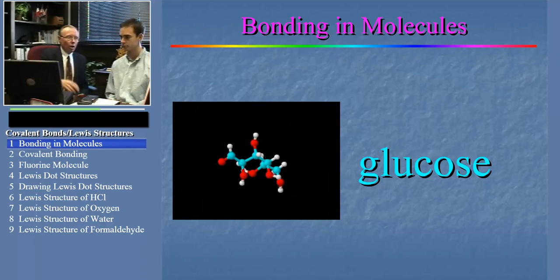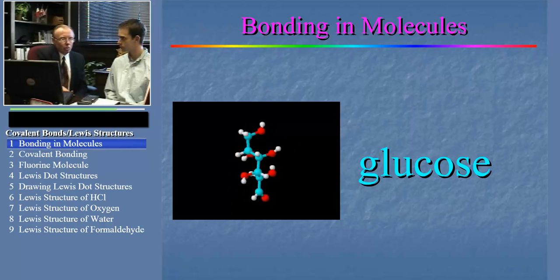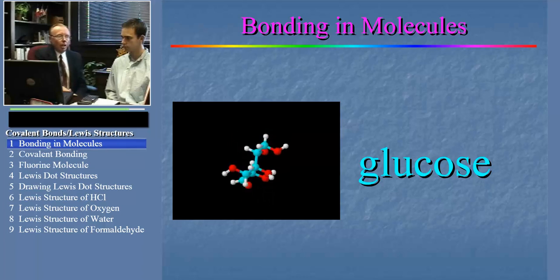Now, how do chemists know how the atoms are arranged in a molecule like this? We're going to start today with a very simple approach, and later we'll get into theories that are more sophisticated.